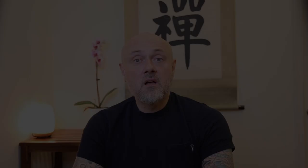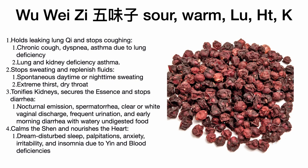The next herb is Wu Wei Zi — five-flavor fruit — a sour, warm herb that enters the lung, heart, and kidney channels. Wu Wei Zi is Schisandra. In this formula it is primarily used to hold leaking lung qi and stop coughing — for chronic cough, painful cough, and asthma. It can also be used for cough where the lung and kidney are not communicating. Another important function is that it stops sweating and replenishes fluids, which are the medium needed to expel an exterior pathogenic factor.